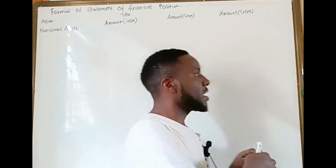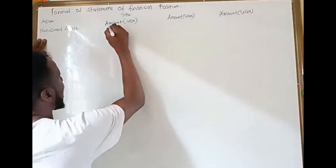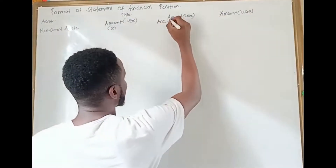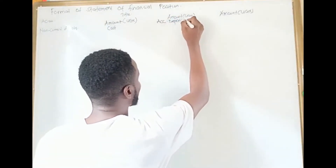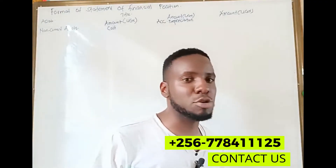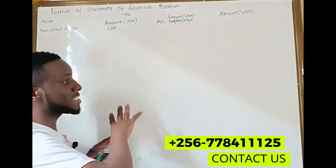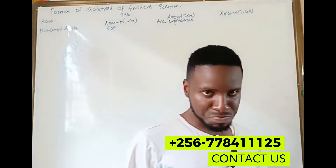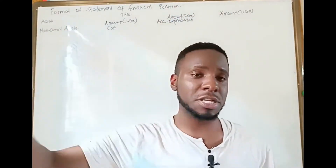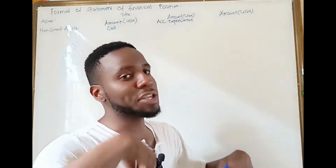All other tangible non-current assets — equipment, machinery, motor vehicle — they all depreciate. Because of that, under non-current assets we shall have the cost column and the accumulated depreciation column. I call it accumulated depreciation because when calculating the statement of financial position for a given year, the asset may have existed for multiple years, so depreciation from previous years accumulates — it keeps on increasing.